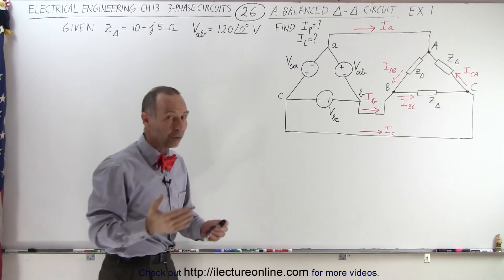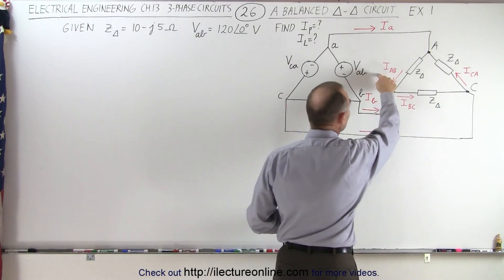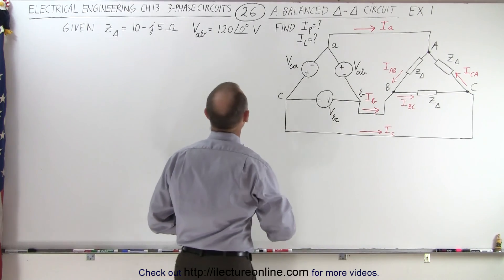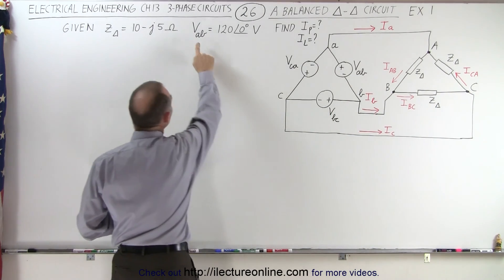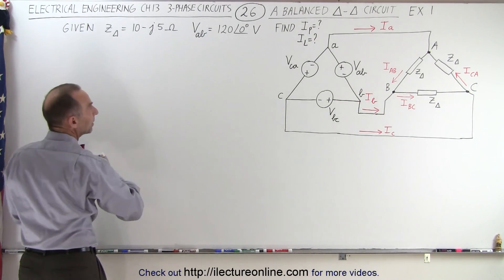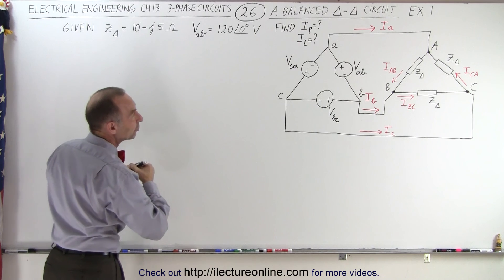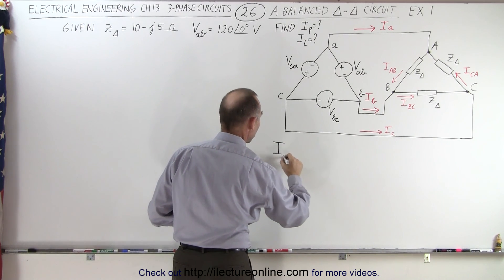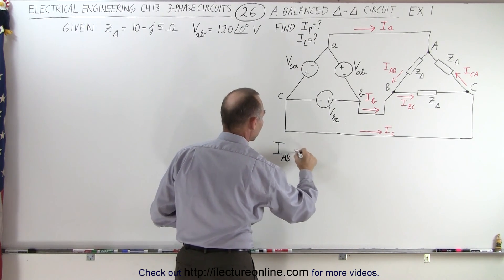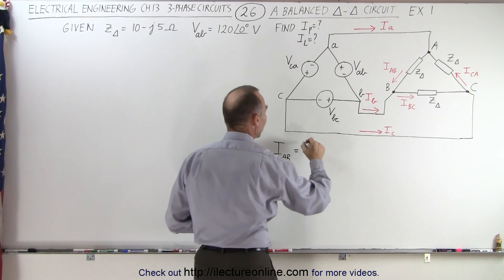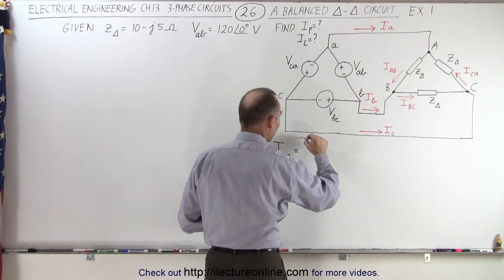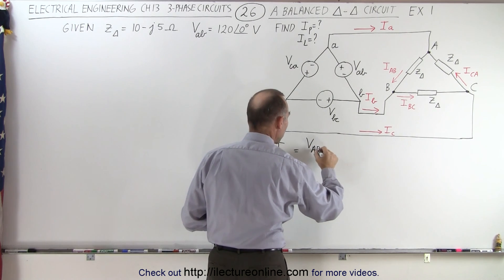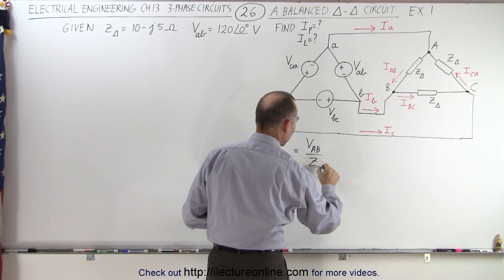Let's start with the phase currents IAB, IBC, and ICA. Since we're given VAB, we can say that the phase current IAB can be found by taking the line voltage VAB and dividing it by the load impedance.